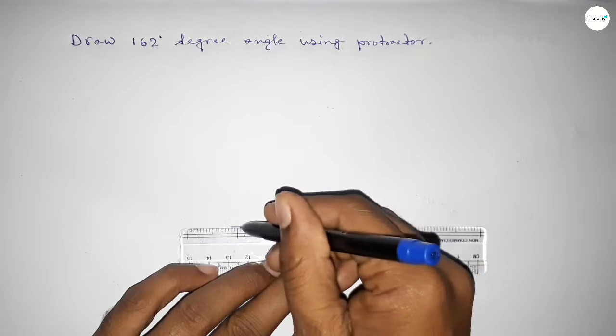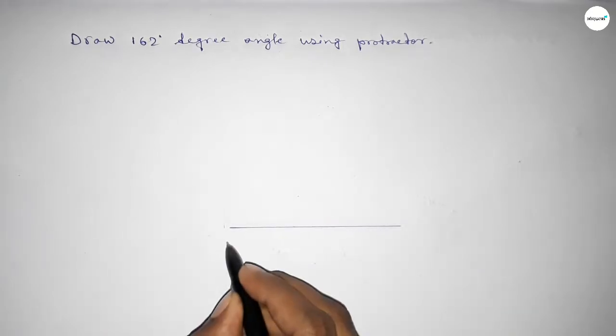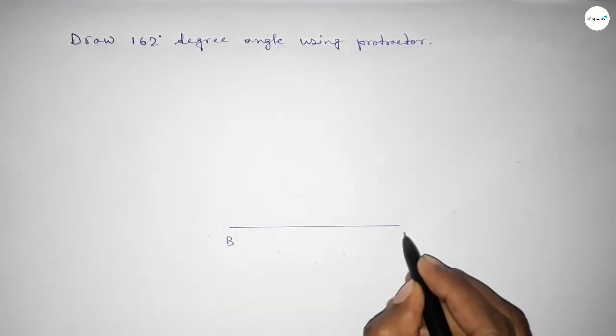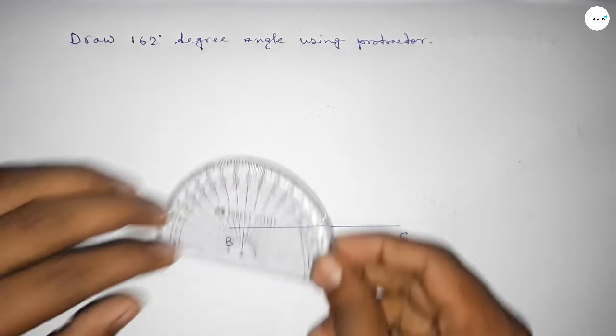So first drawing here a line. Next, taking here point B and here C. Now putting the protractor on point B perfectly.